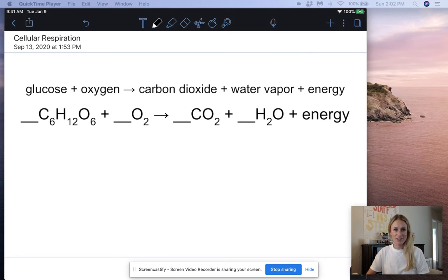Let's talk about cellular respiration. Now this is our equation for cellular respiration. It's glucose plus oxygen gas react to form carbon dioxide, water vapor, and energy. This equation might look familiar to you because it's actually the opposite of photosynthesis.